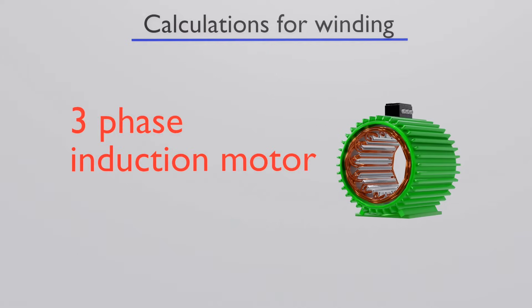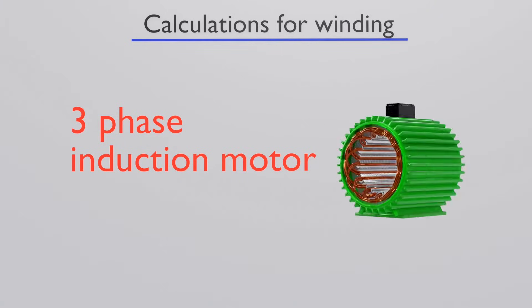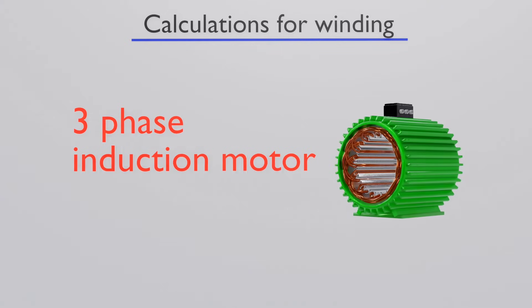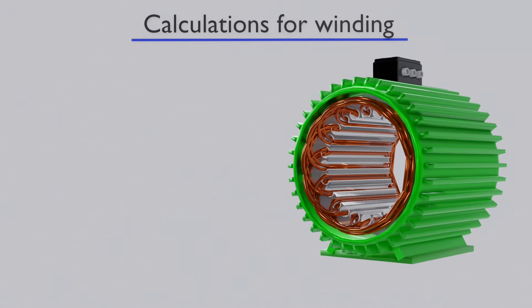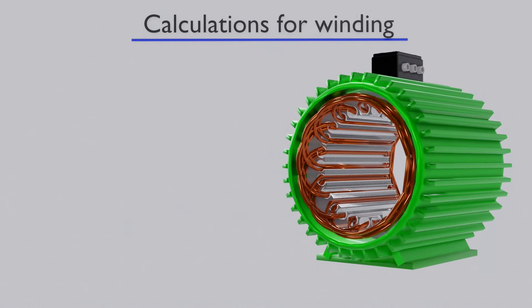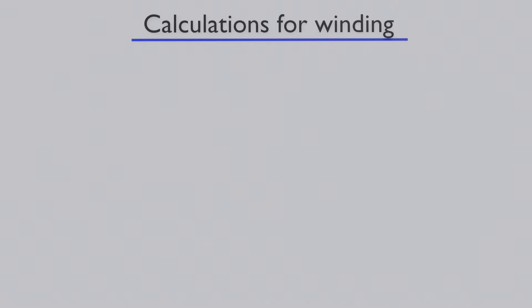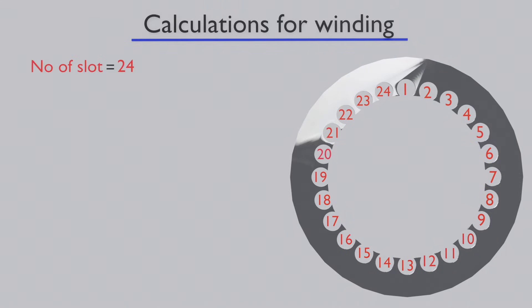We make a winding for a three-phase induction motor. For this, we do some calculations. We place the winding in the stator core. In this stator core, slots are provided to adopt the winding. There are a total of 24 slots.